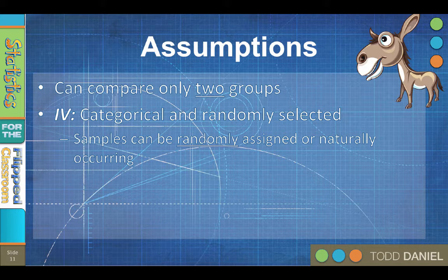When naturally occurring groups are used, it is called quasi-experimental methodology. So for example, if you're comparing males and females, you cannot randomly assign participants to be a certain gender. You have to take people as they are. If you are studying people with cancer, you cannot randomly assign people to have cancer or not. You have to take them as they are.